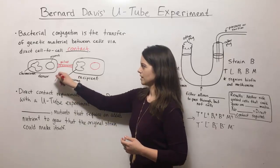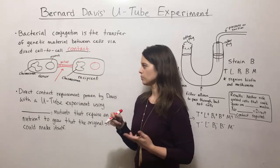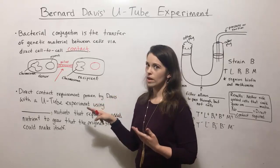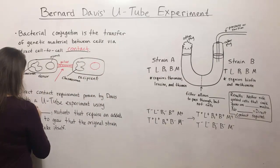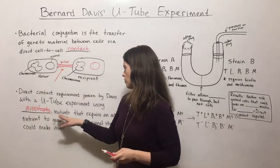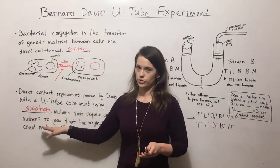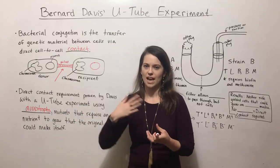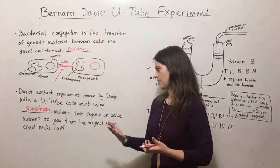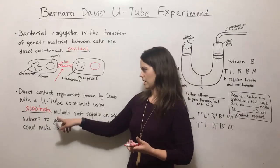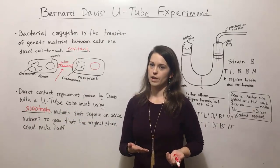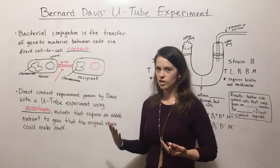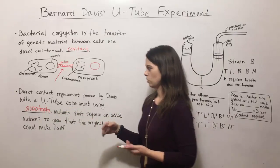The fact that direct cell contact was necessary for this process was proven by Bernard Davis with the U-tube experiment. He used bacteria known as auxotrophs. Auxotrophs are mutants that require an added nutrient — they will not grow on just minimal media. Whereas the original unmutated strain could make that nutritional component itself and therefore could grow on minimal media. The auxotrophs have picked up some mutation and now need some other nutrient added in order to be able to grow.